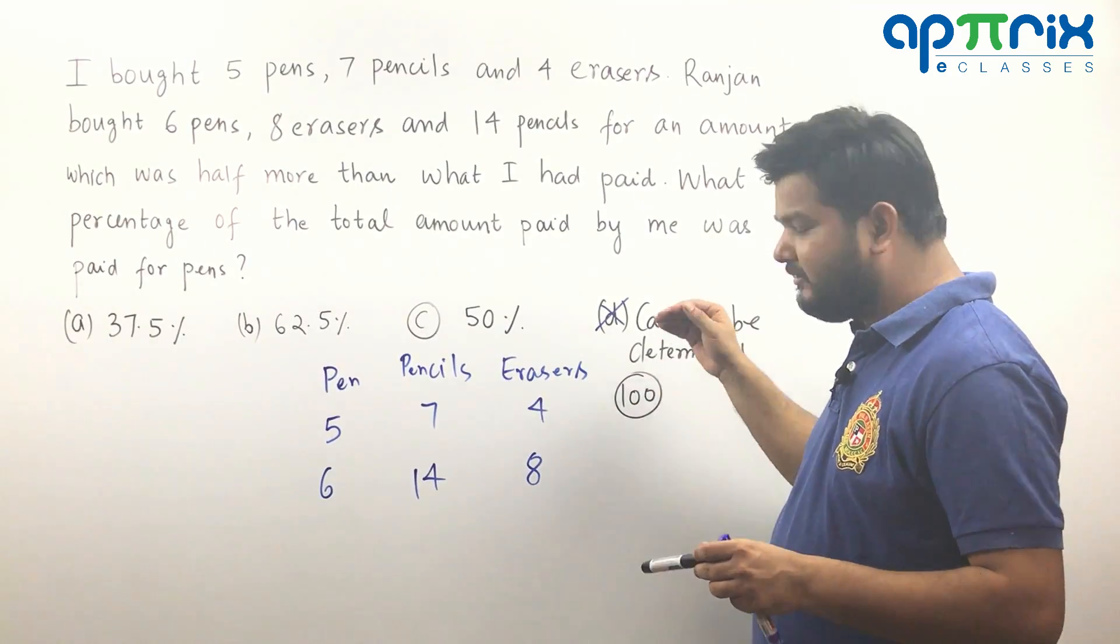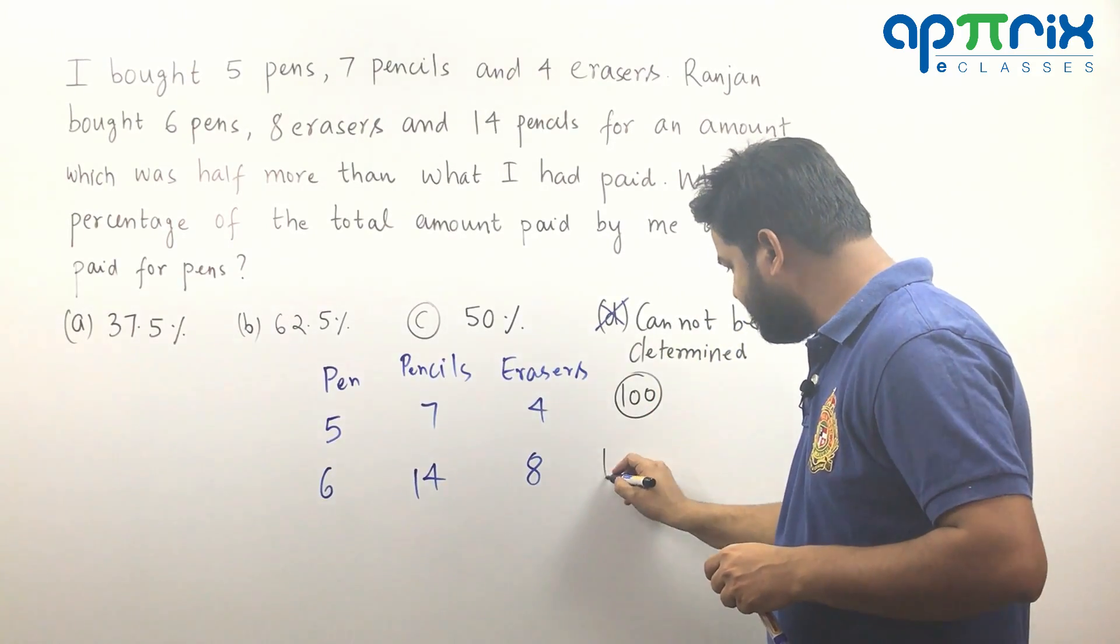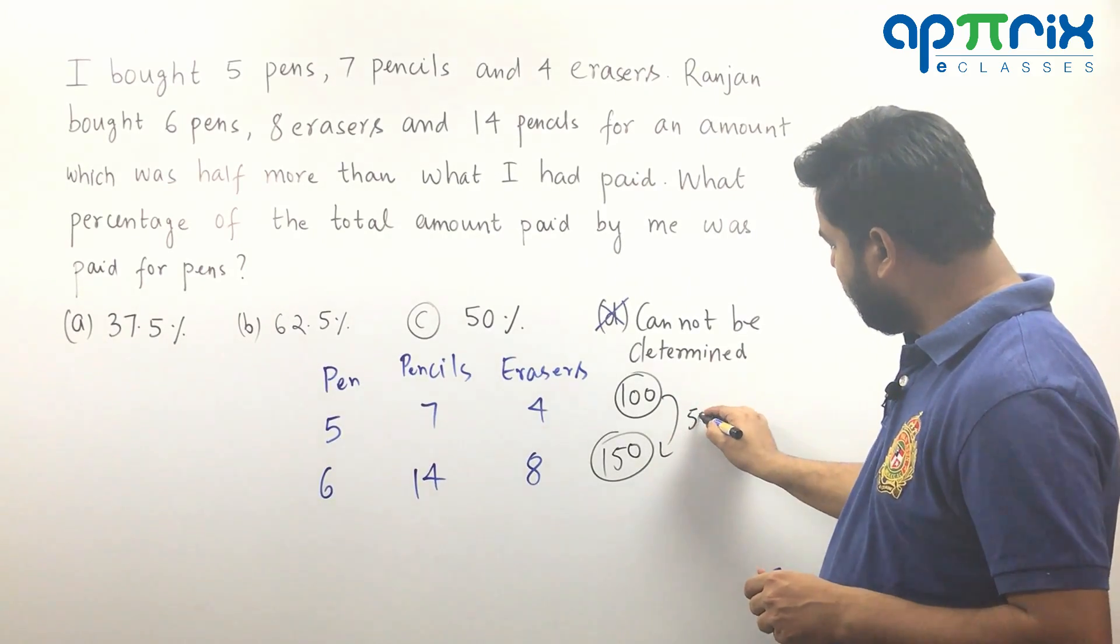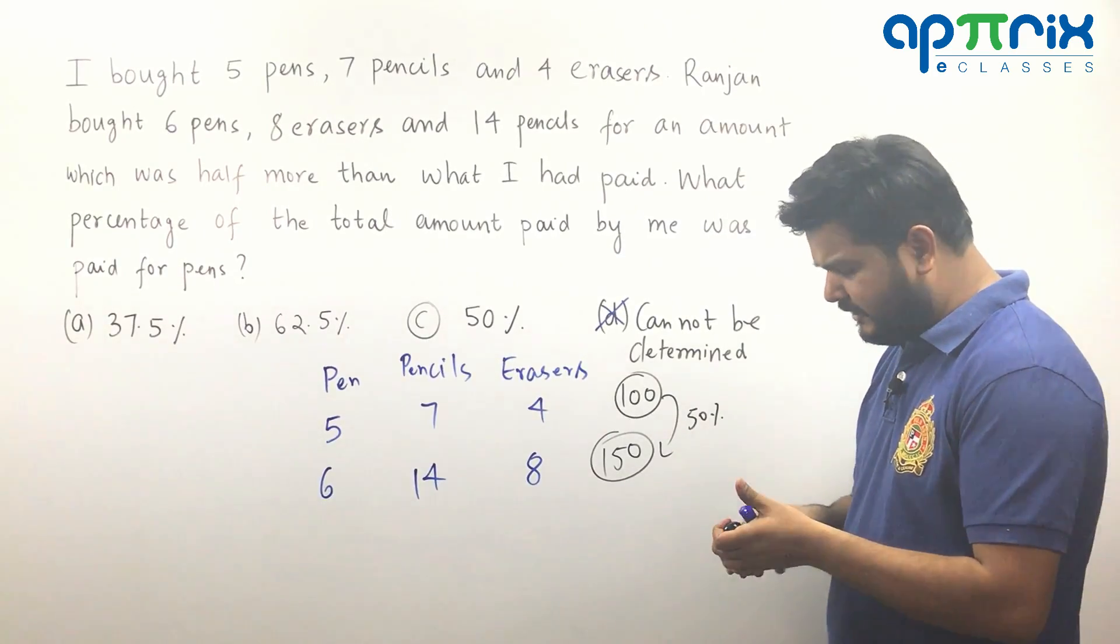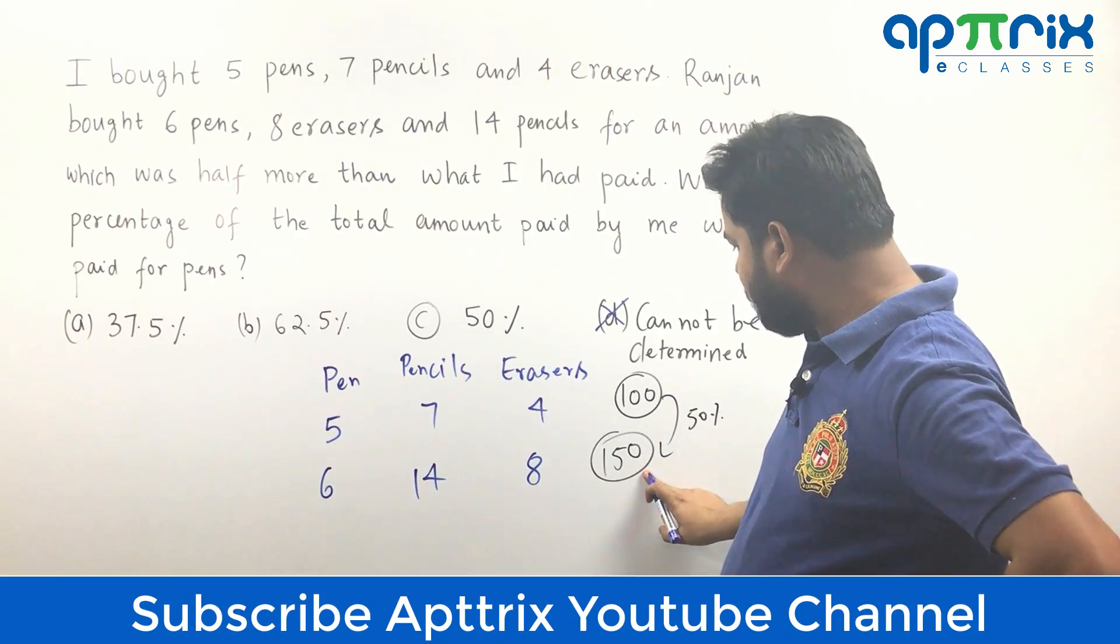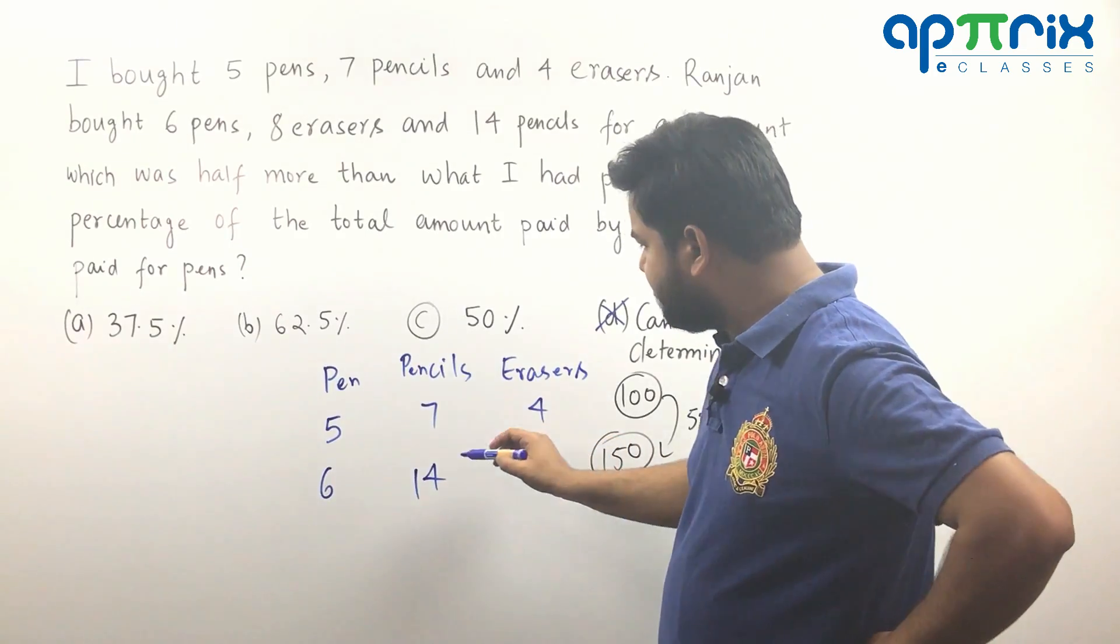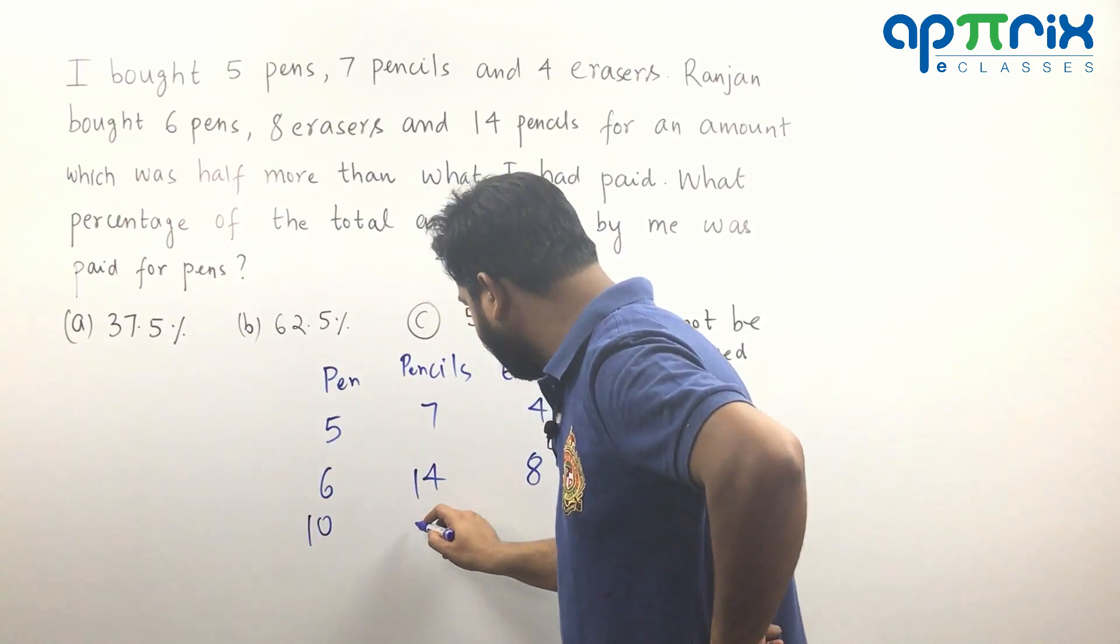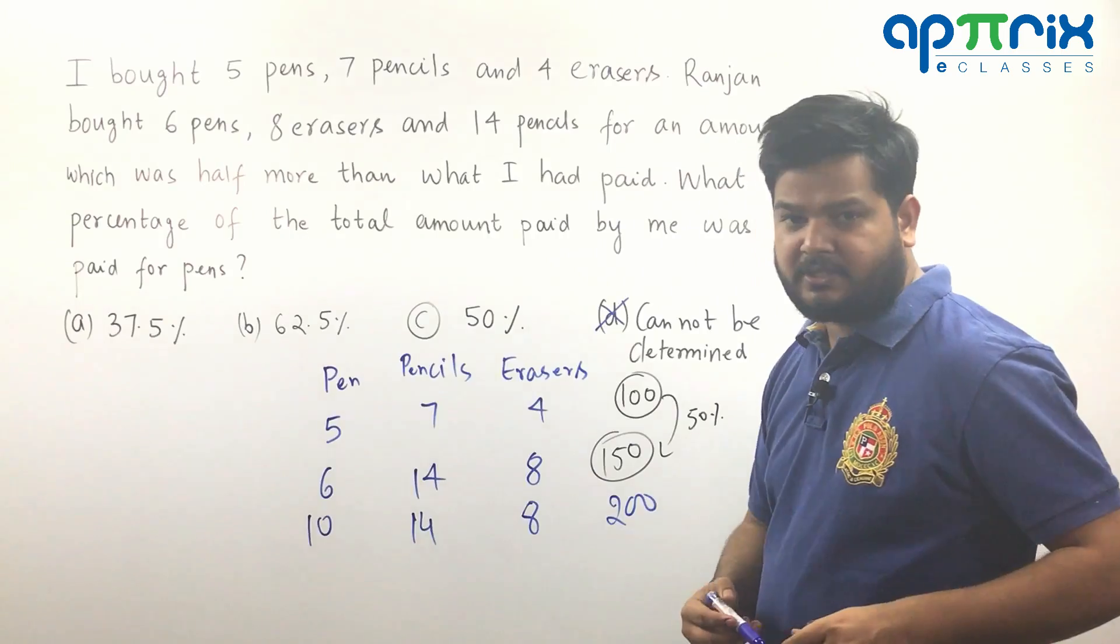Now in this case it is going to be 150 because it is given in the question that here 50 percent more is being paid or half more is being paid. So it is going to be 150. Now try to understand one thing that if you assume this particular value to be 150 and then we can clearly understand here that if this value would have been in this form, let's think about this combination: 10, 14 and 8. Then total amount paid should be how much? 200. I have just doubled the first.